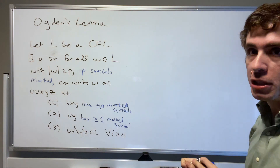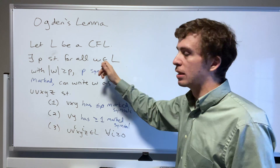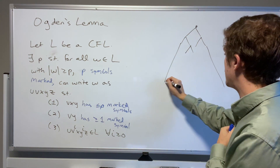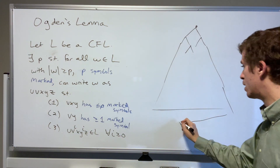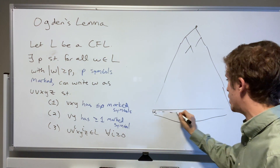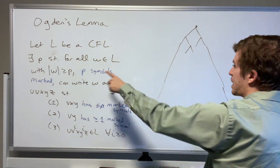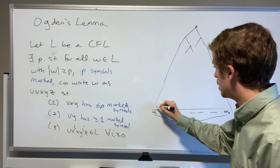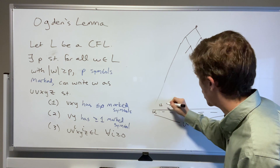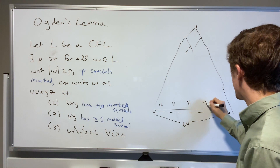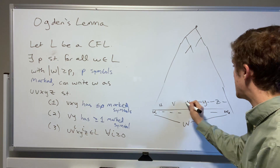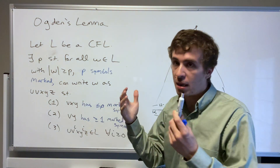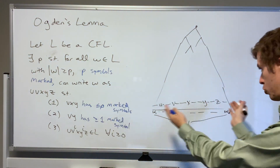Pictorially, if we consider a derivation of string w — a parse tree — we get a structure like this. This is the string w, with characters w_1 up to w_n, so the length of the string is at least p but could be way longer. We can write the string in five pieces: u, v, x, y, and z. Each of these occupies some amount of space in the original string, and each piece could be any particular length.